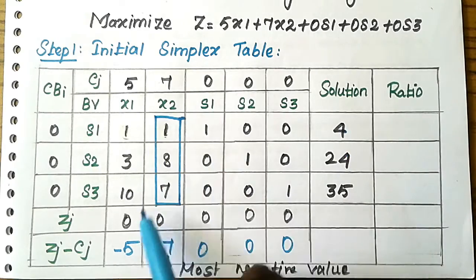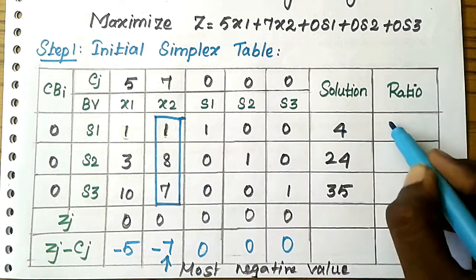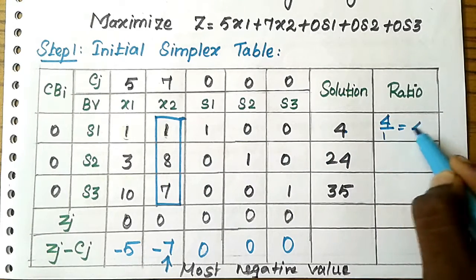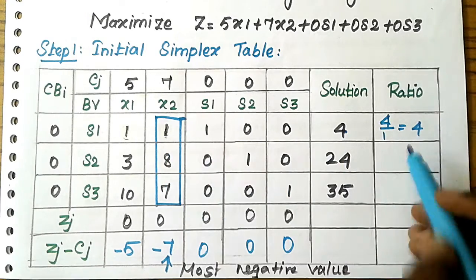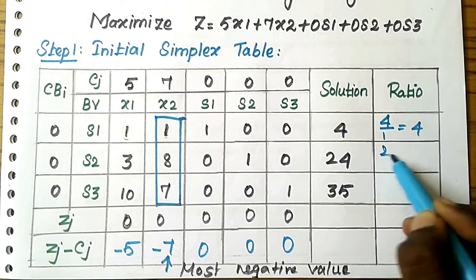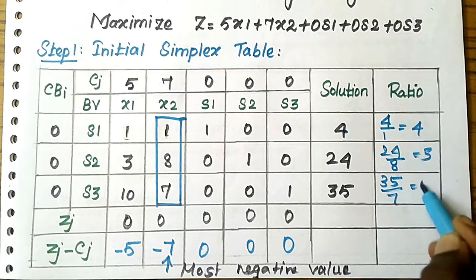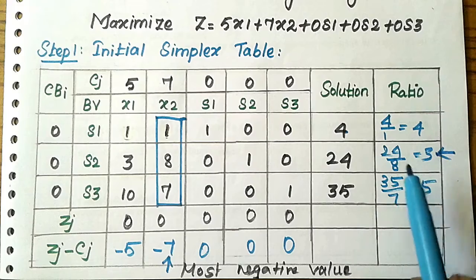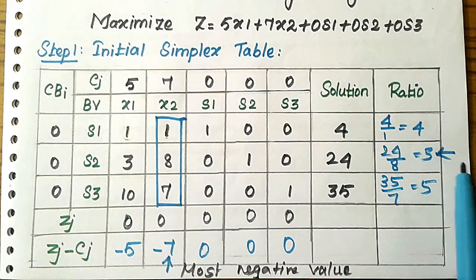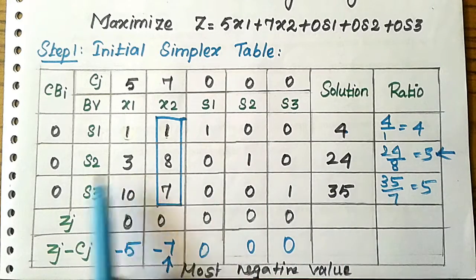After identifying the pivot column, we calculate the ratio by dividing the solution column by the pivot column elements. So 4 ÷ 1 = 4, 24 ÷ 8 = 3, and 35 ÷ 7 = 5. To find the leaving variable, we select the minimum positive ratio. Here 3 is the minimum positive value, so we select that row.